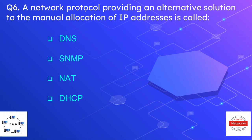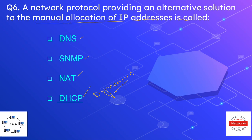Question number six is: a network protocol providing an alternative solution to the manual allocation of IP addresses is called? The options are DNS, SNMP, NET, and DHCP. The correct option is DHCP, or Dynamic Host Configuration Protocol. The word 'dynamic' indicates that this is the alternative to manual allocation — using DHCP we can dynamically allocate and assign IP addresses to clients.